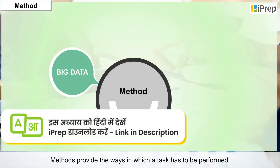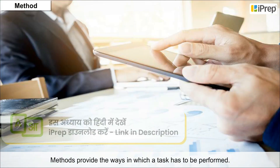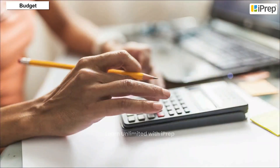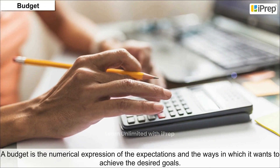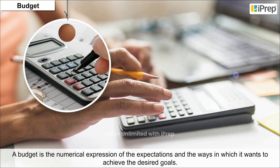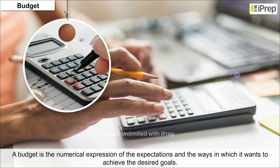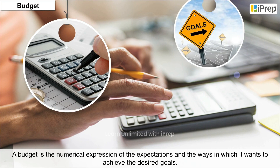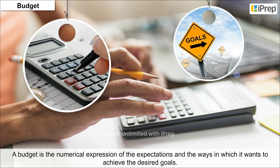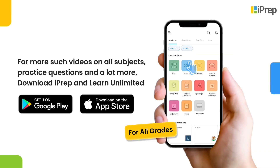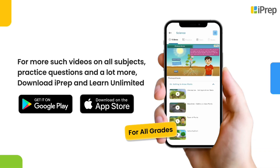Methods provide the ways in which a task has to be performed. A budget is the numerical expression of the expectations and the ways in which an organization wants to achieve its desired goals.